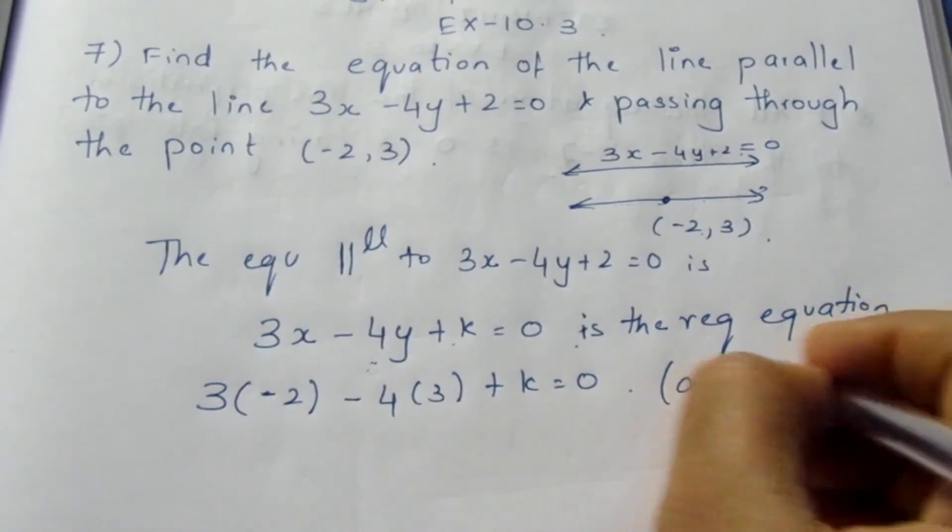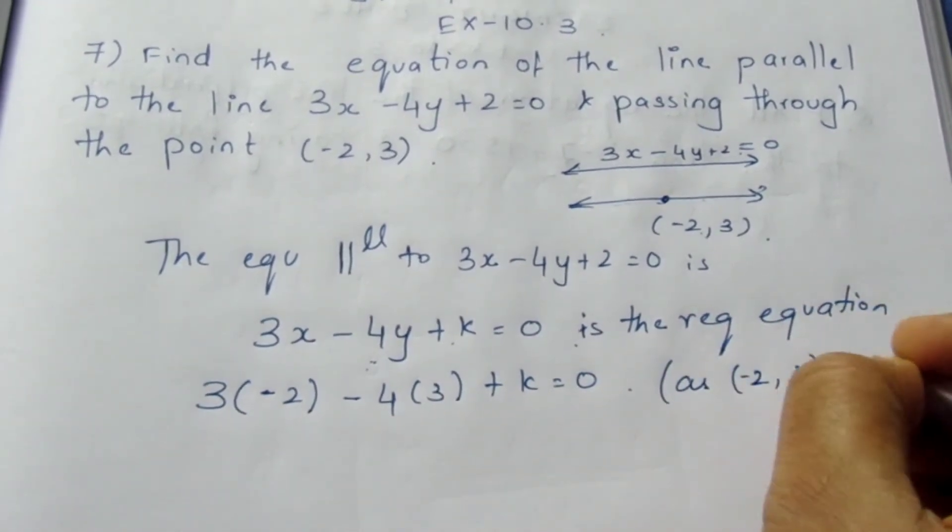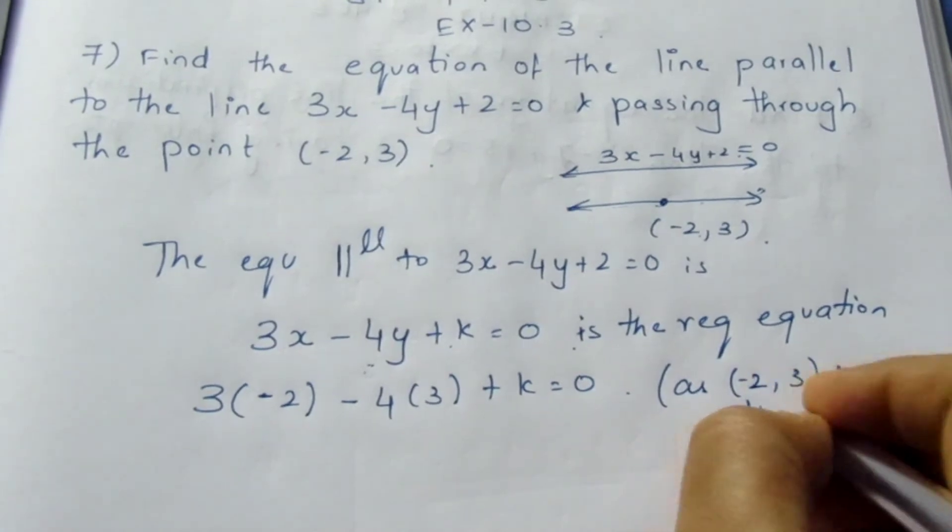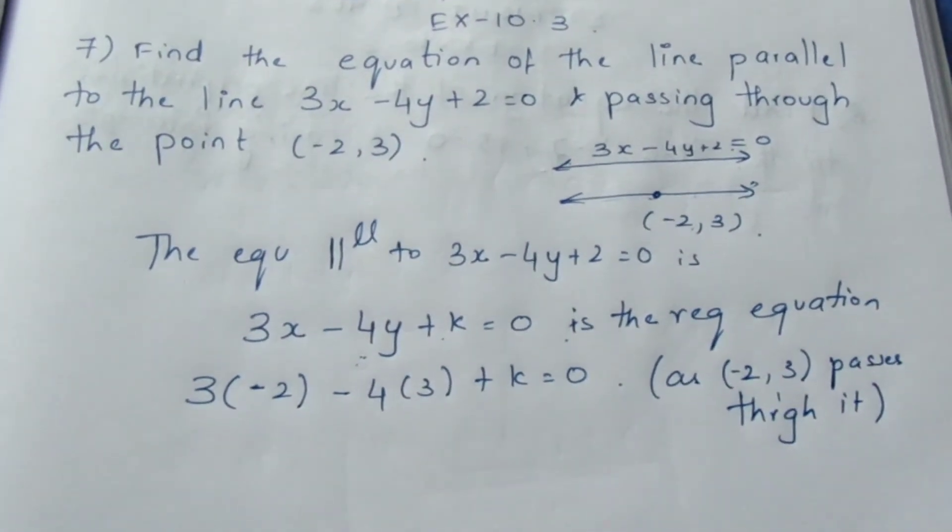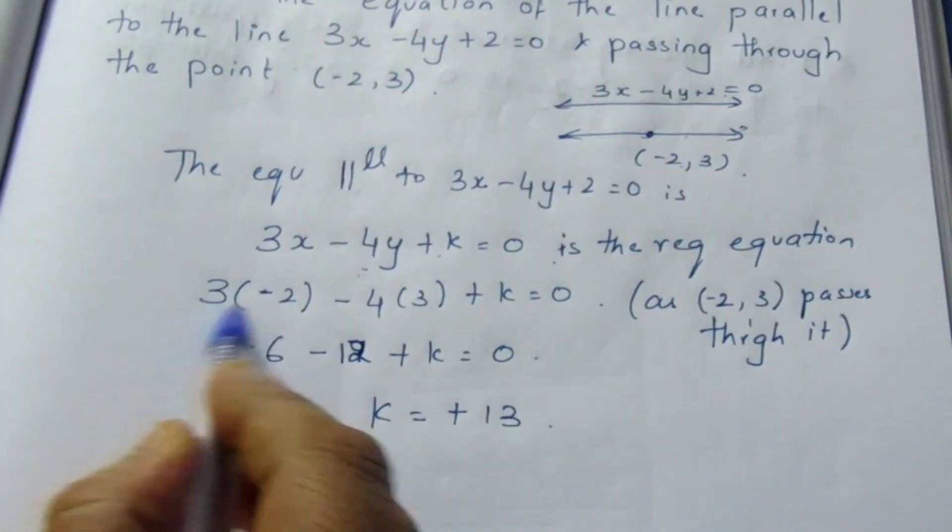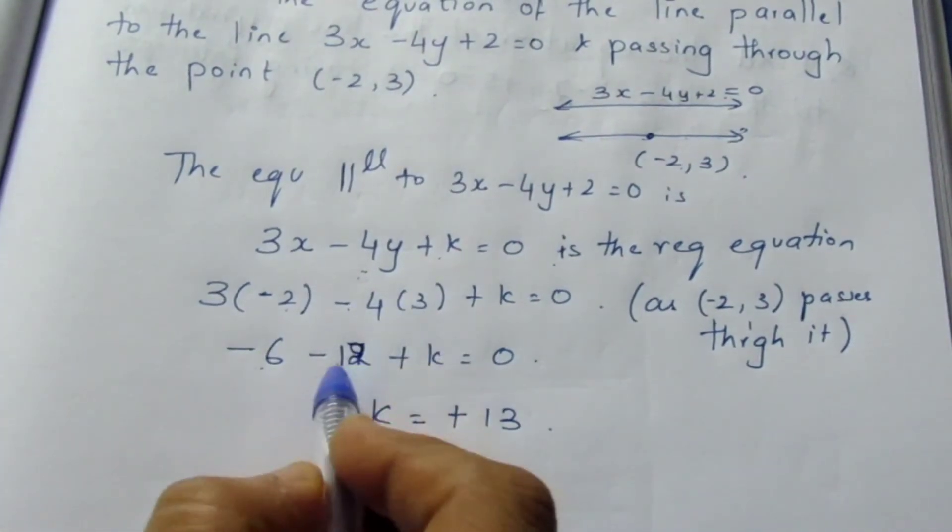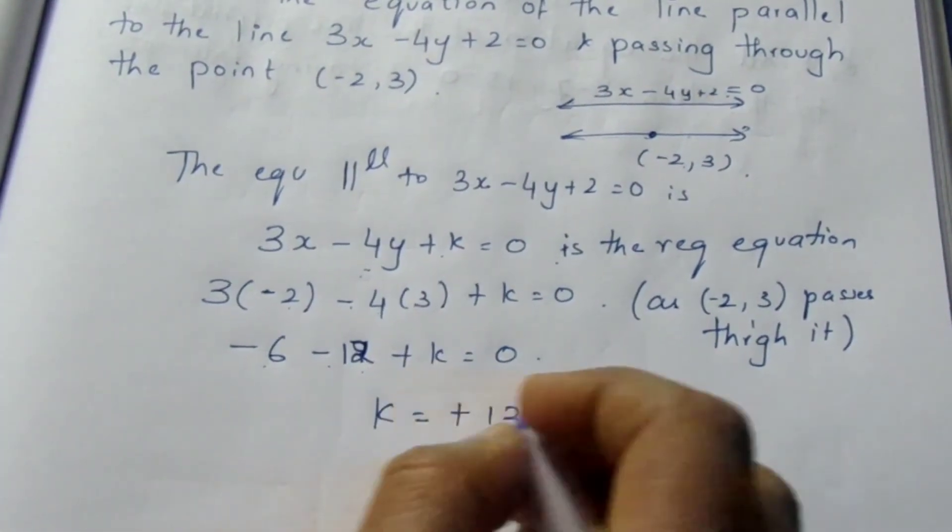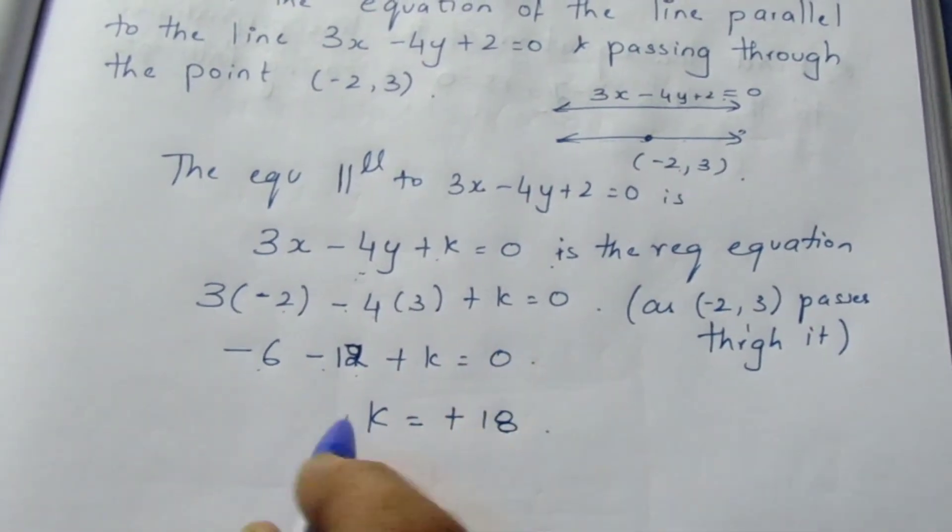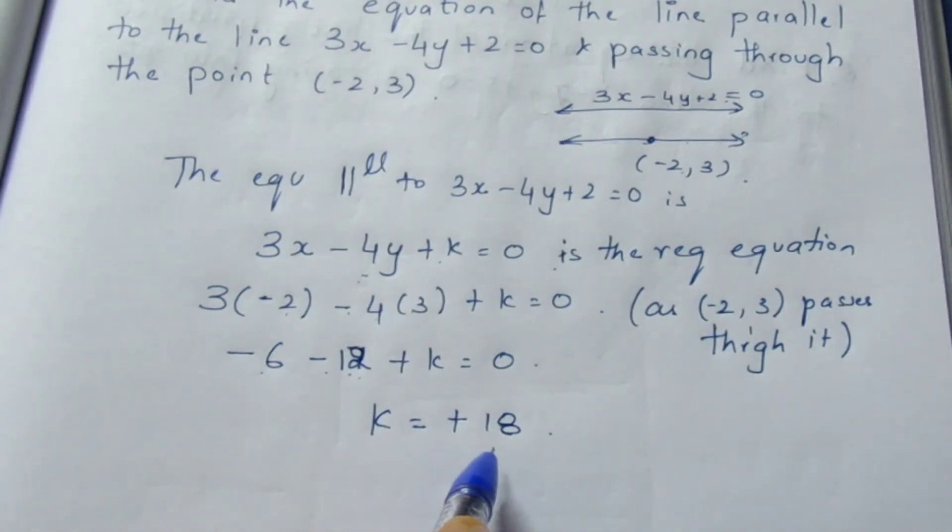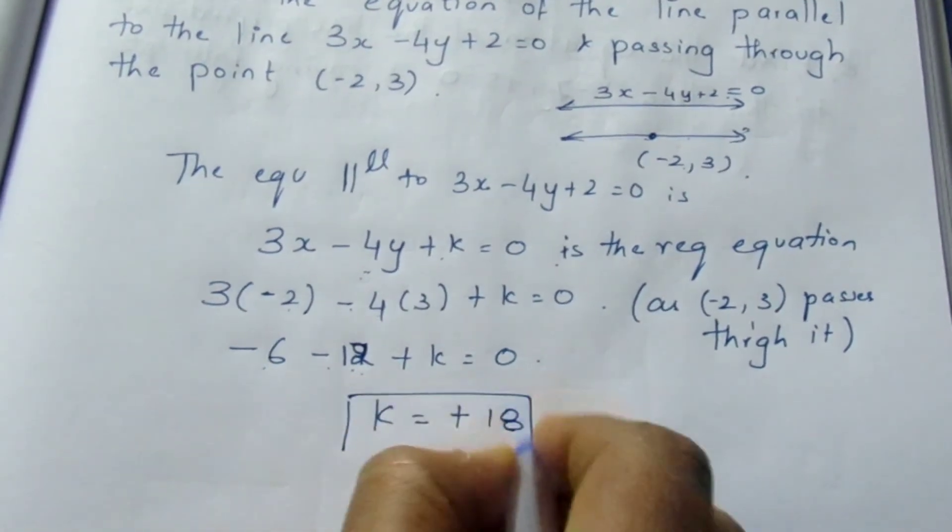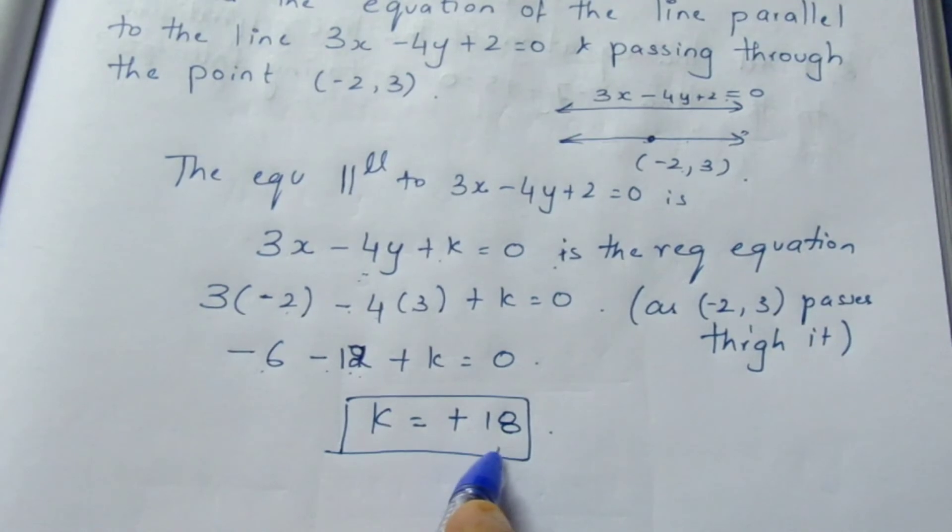Now this becomes minus 6 minus 12, which equals minus 18. So minus 18 plus k equals 0. If I bring to this side, it becomes plus 18. So k is equal to 18.